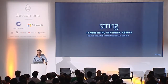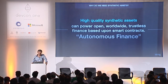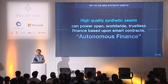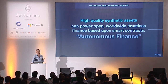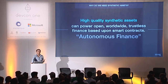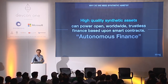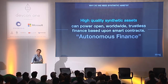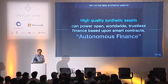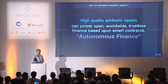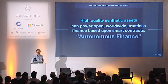I'm Dominic. First question: why do we need synthetic assets? Synthetic assets are crypto tokens that represent real-world assets like gold, Facebook stock, pretty much anything you see in the traditional financial world. If we have high-quality synthetic assets, we can power open, worldwide, trustless finance based upon smart contracts — what we call autonomous finance.